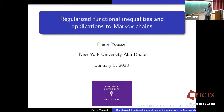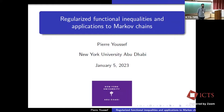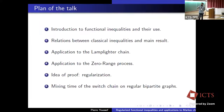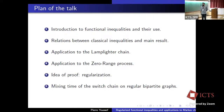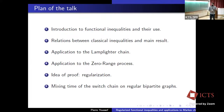I'd like to thank the organizers for the invitation and for the opportunity to be here. I'm going to talk about some joint works with Justin Sales and Konstantin Tichomirov. It's about regularized functional inequalities. Here's the plan of the talk: first I'm going to introduce some classical functional inequalities and what they are useful for, then discuss the relations between those classical inequalities, state the main result, and then we're going to see two applications — one to the lamplighter chain and the other for the zero range process.